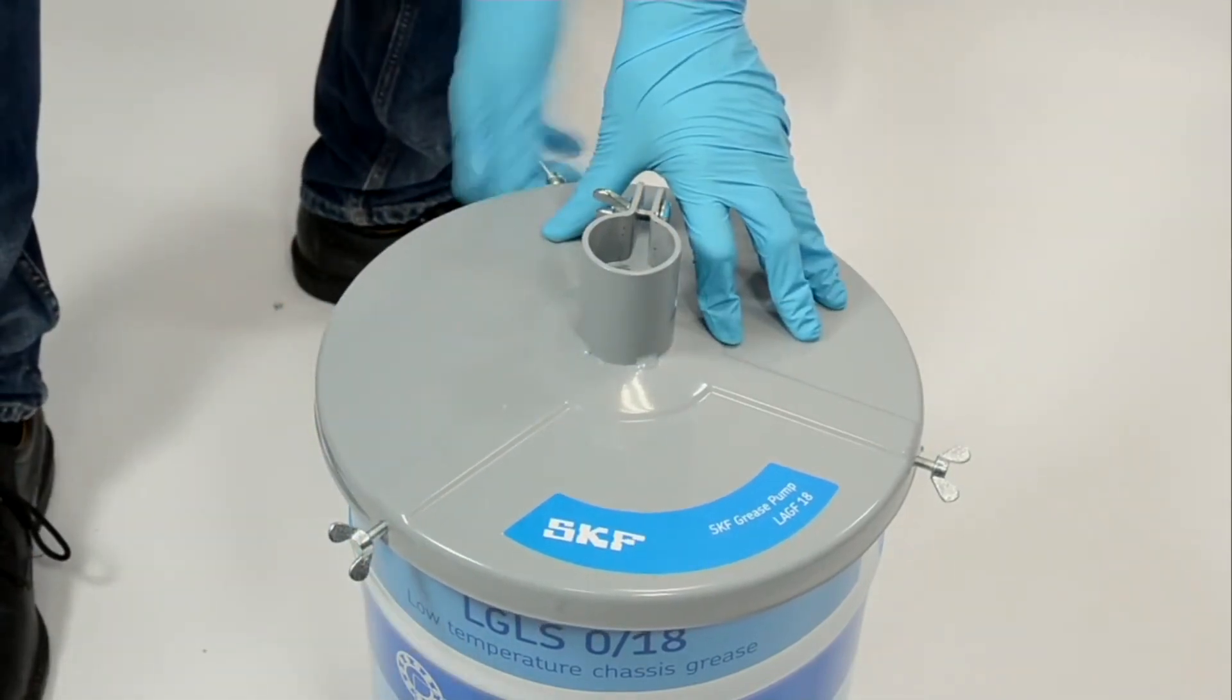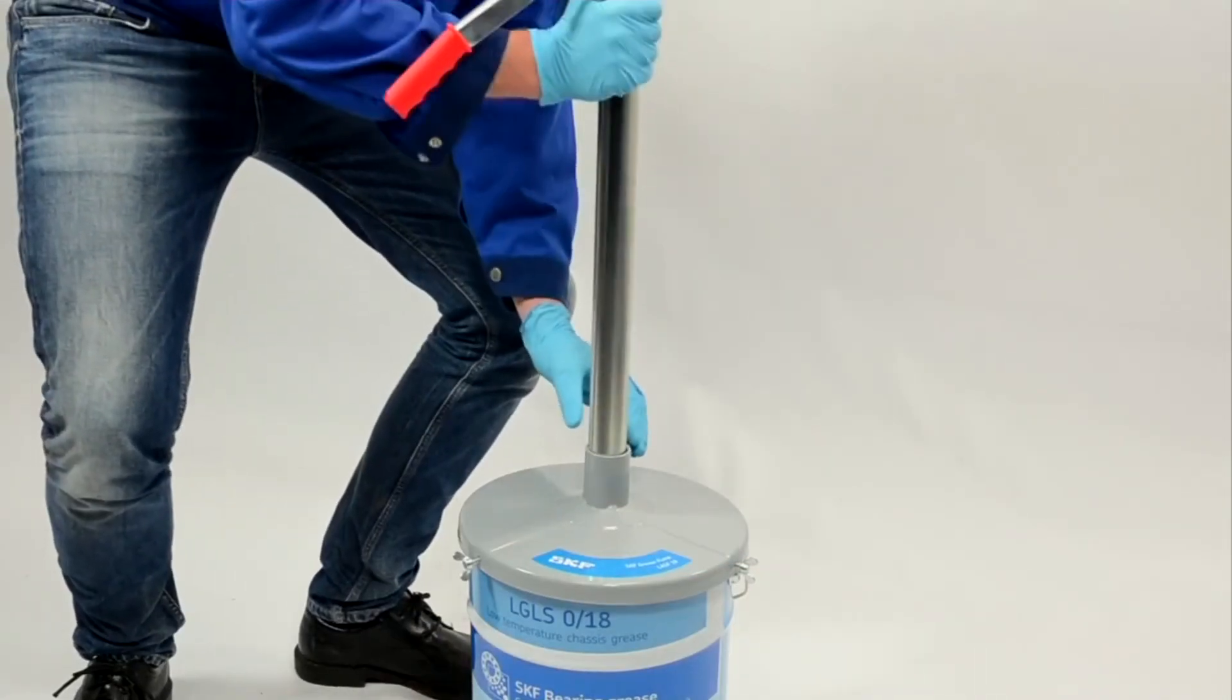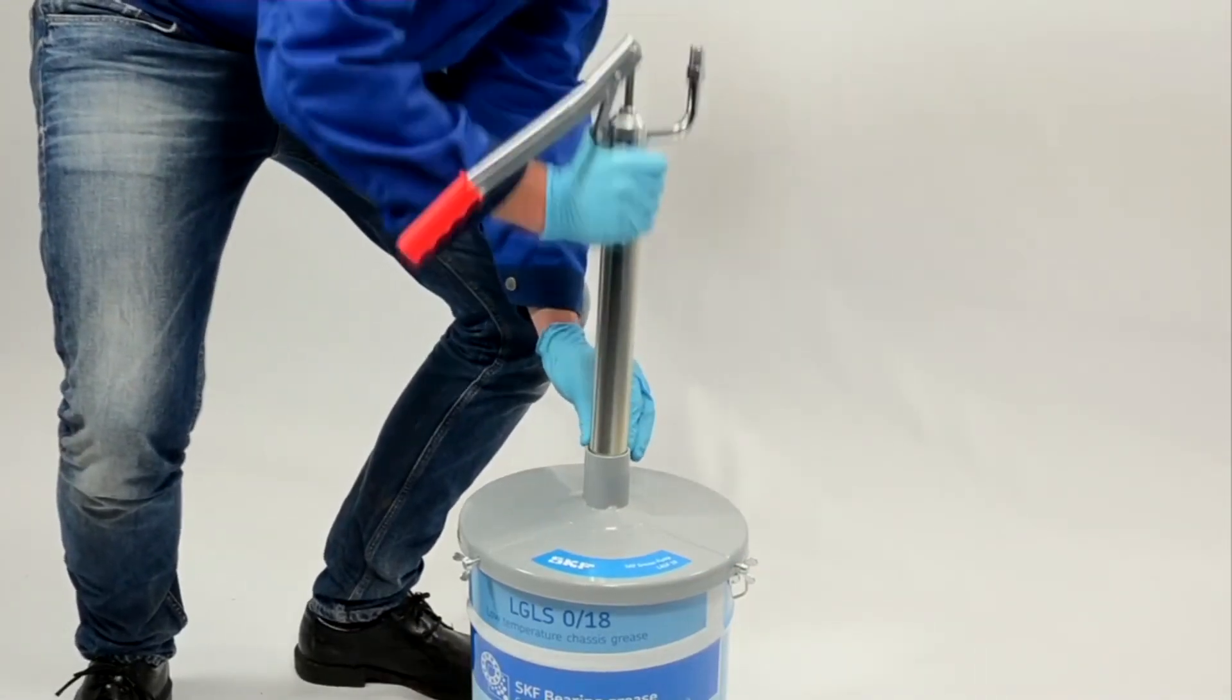Fit the cover plate, insert the piston rod and make sure it goes to the bottom of the drum.